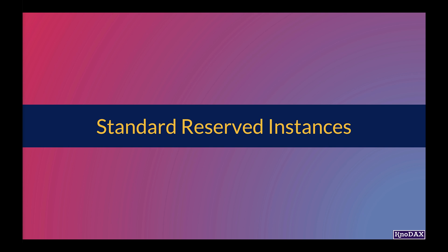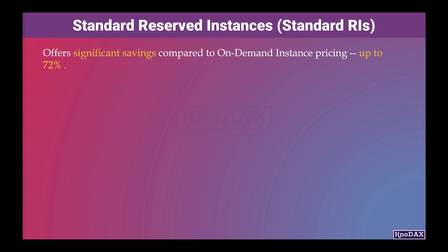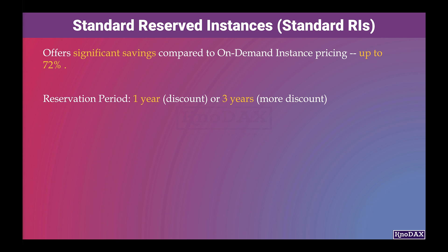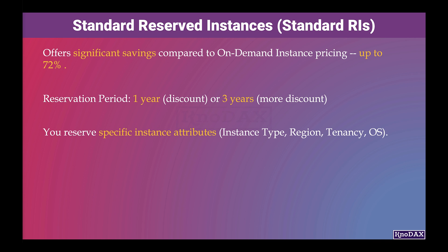Standard reserved instances offer significant savings compared to on-demand instance pricing. For example, standard reserved instances can save you up to 72% compared to on-demand instance pricing. You can have instances reserved for a duration of one year or three years, and you will get more discount when you reserve them for three years. You reserve based on specific instance attributes — for example, what instance type you want, in which region, what the tenancy will be, and what the operating system will be.